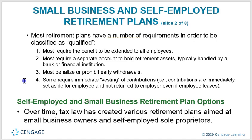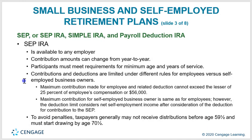Self-employed and small business retirement plan options include the SEP IRA, Simple IRA, and payroll deduction IRA. A SEP IRA is available to any employer; contribution amounts can change from year to year; participants must meet minimum age and years of service requirements; and contributions are limited differently for employees versus self-employed owners. To avoid penalties, taxpayers may receive distributions before age 59½ but must start drawing by age 70½.